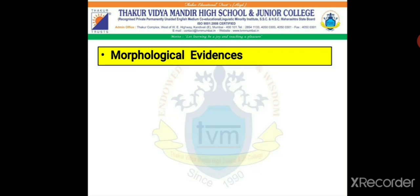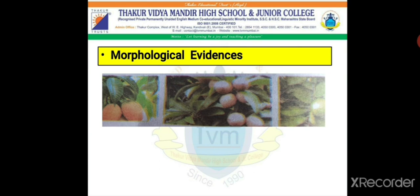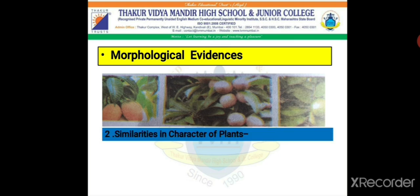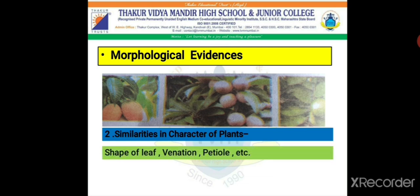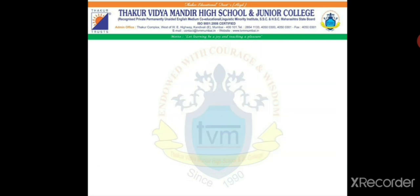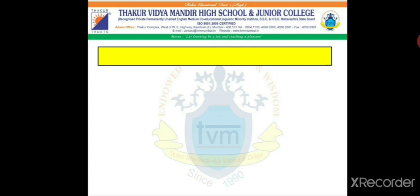Next, regarding plants — in this picture you can see three species of plants. The first is mango, the second is chiku, and the third is guava. If you observe the plants properly you will find certain similarities in the characters of these plants: the shape of leaf, venation, petiole, etc. This similarity indicates that they originated from the same species.